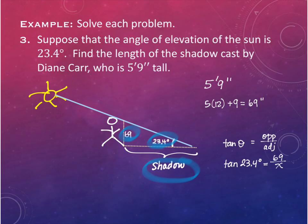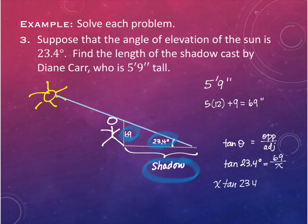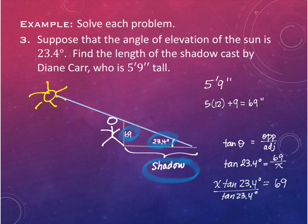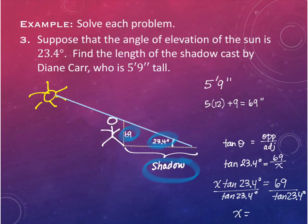The goal is to get X by itself. The tricky part is that X is in the denominator, so we multiply both sides by X. Then divide both sides by tangent of 23.4 degrees. X equals 69 divided by tangent of 23.4 degrees - your calculator will do that just fine.